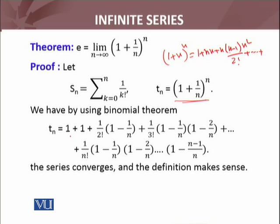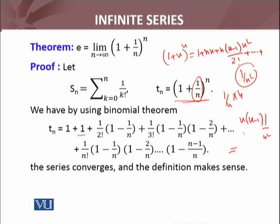We get t_n equals 1 + 1 + (n(n−1)/2!) · (1/n)², and the n² cancels with n², leaving (1 − 1/n)/2!. Similarly the next term turns out to be (1 − 1/n)(1 − 2/n)/3!, and so on and so forth.